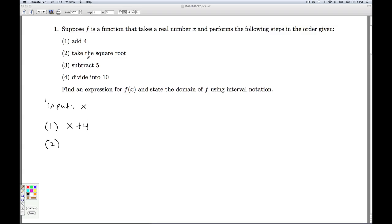And the next step, we're taking square root. So we're taking the square root of what we obtained from the first step. Now, number three, we're subtracting 5. So we're subtracting 5 from what we got in step two. So that's square root of x plus 4 minus 5.